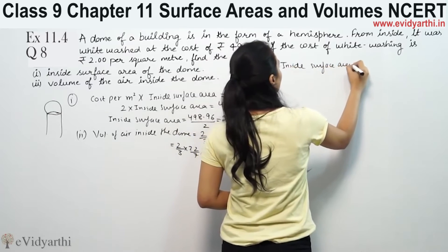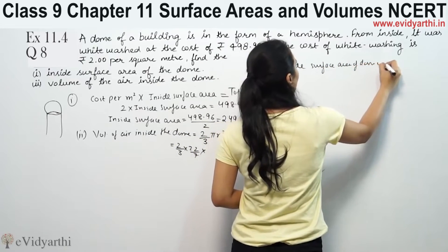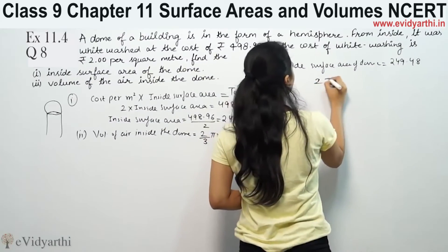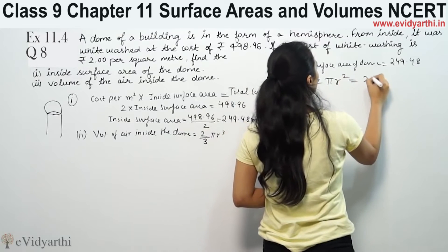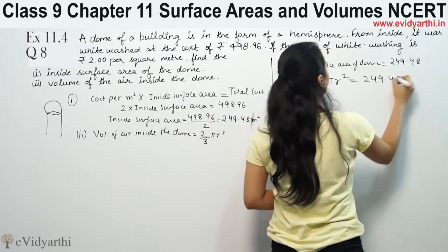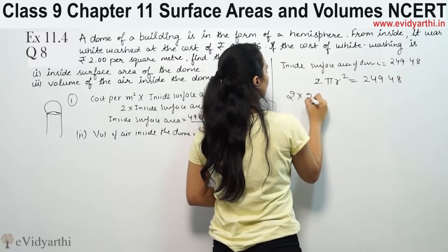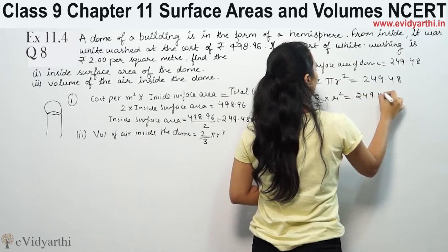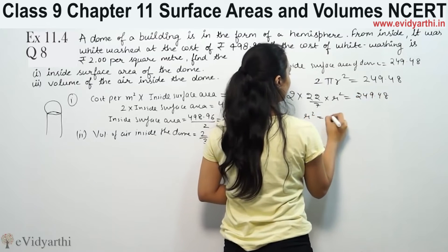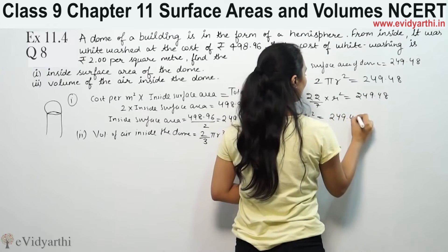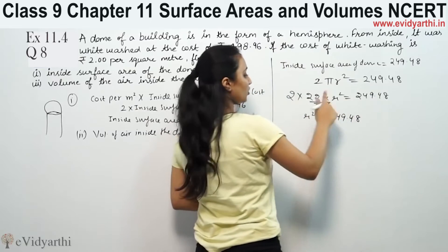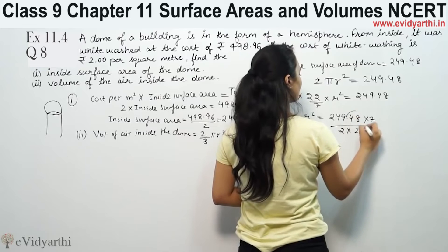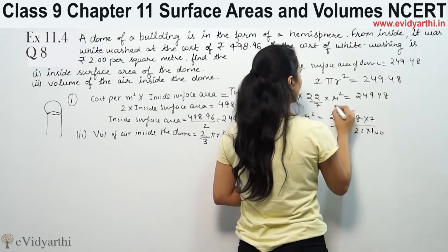Surface area of dome: inside surface area is 2πr² = 249.48. So 2 × 22/7 × r² = 249.48. Therefore r² equals 249.48, and solving gives us the reciprocal.